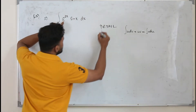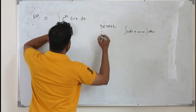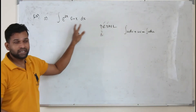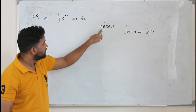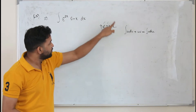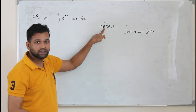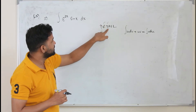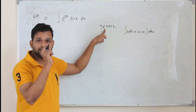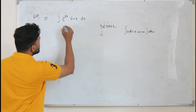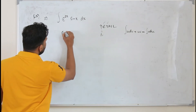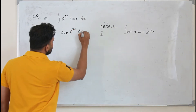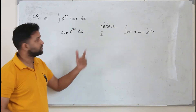We have exponential and trigonometric functions here. In the abbreviation DETAIL, whichever letter comes first — E comes before T — so we take the exponential as dV. Here we take dV as e to the power 2x dx. That's the first step.